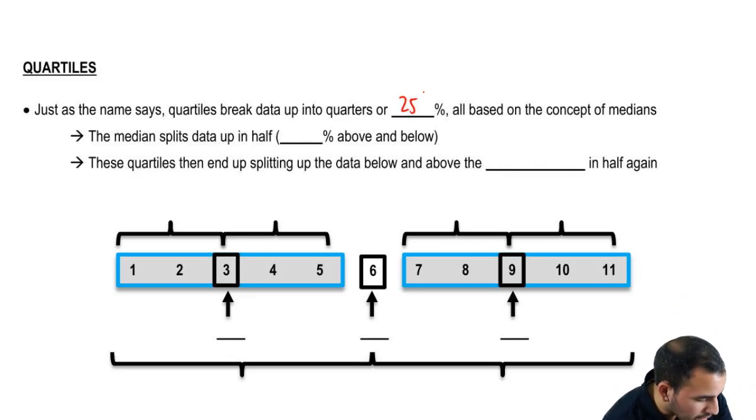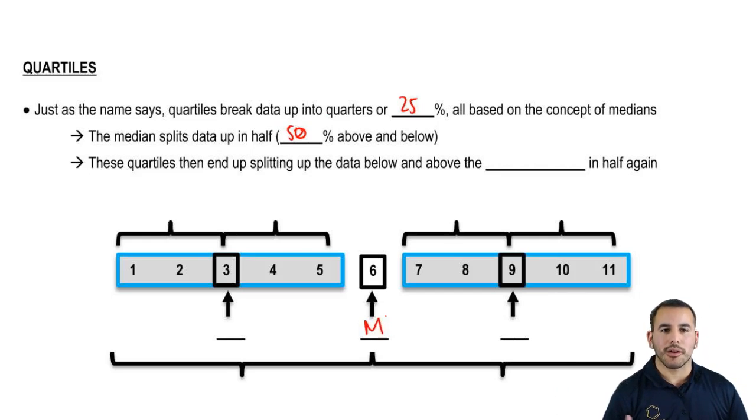The median splits up data in half - you have 50% above and 50% below. In our data set of 11, our median is 6, which we can figure out using the measure of central tendency.